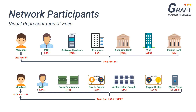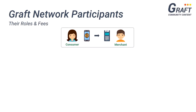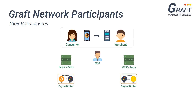Before we start explaining each of these types of scenarios, let's quickly go over the role of each of these participants on the Graft network along with their associated fees. In a typical retail transaction, a merchant processing a payment through Graft could require the services of any of the following Graft network participants: the merchant service provider, the proxy supernode owners, the pay-in and pay-out brokers, the owners of the supernodes within the authorization sample, and finally the owner of the mining node.